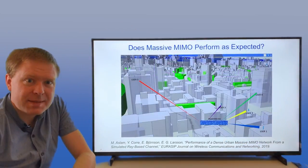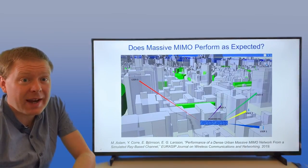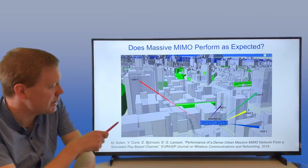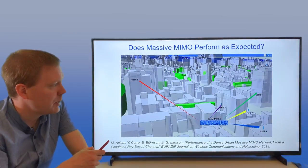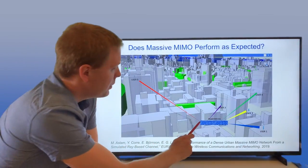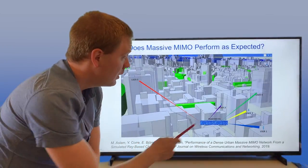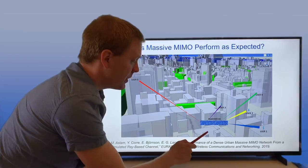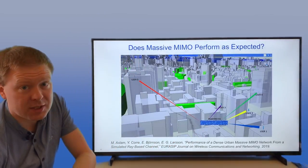Does this Massive MIMO systems that exist in reality perform in the way that we were projecting in theory? Here's a simulation study that we did on that using a state-of-the-art channel model. We're putting up base station arrays in the city that is modeling New York. We put out users in different places, and we're using arrays of different sizes and measuring the channels using this channel model.